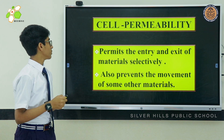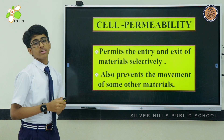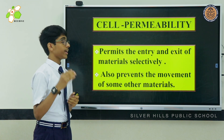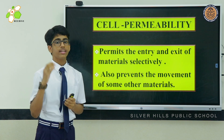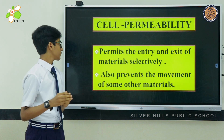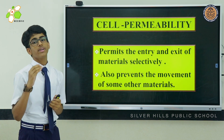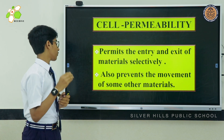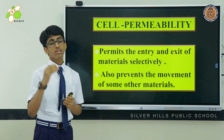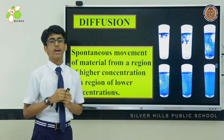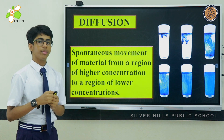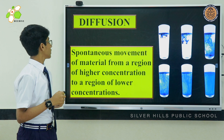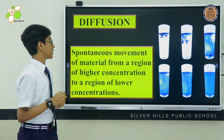Cell permeability. The cell membrane permits the entry and exit of materials selectively, and also prevents the movement of certain materials. That is the reason why it is known as a selectively permeable membrane.